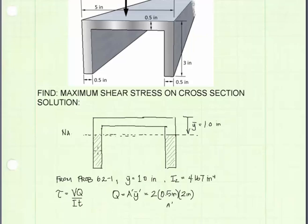Now Y-bar prime is the distance from the centroid of A-prime to the neutral axis. And if the height of this rectangle here is two inches, then Y-bar prime is just one inch. And we get a value for Q of two inches cubed.